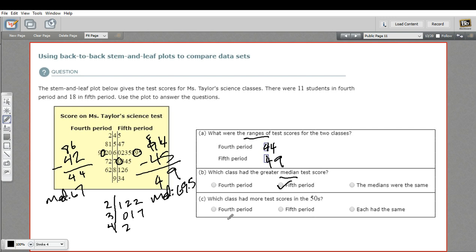All right, the last one says, which class had more test scores in the 50s? That's pretty easy. You just look for the five here in the middle and you see two numbers here, a 54 and a 57 and two numbers here, a 51 and a 58. So they both had two test scores in the 50s. So each had the same. So that is a little bit of work with back to back stem and leaf plots.